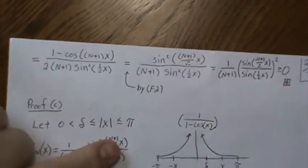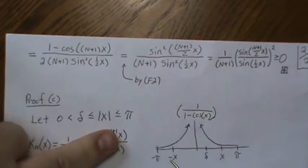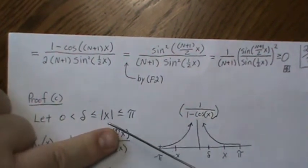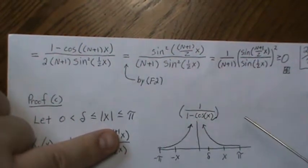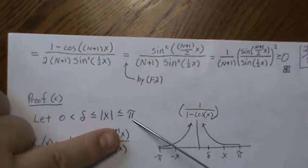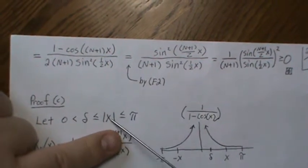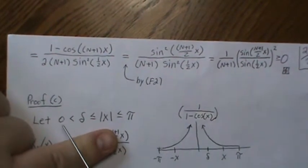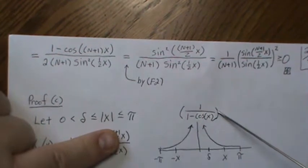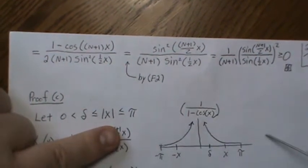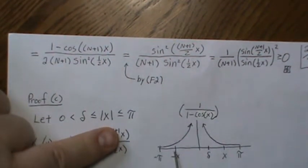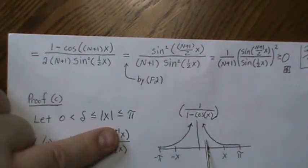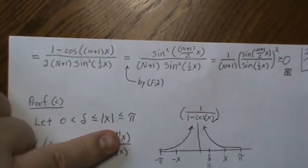For part C, I want to establish a preliminary property. We let x be between negative pi and pi — since we're periodic within two pi — and we let delta be slightly less than whatever x we choose, noting it's always positive. The function one over one minus cosine of x is even, and if we pick a delta less than x and plug it in, we get a slightly bigger value than if we had chosen x itself.